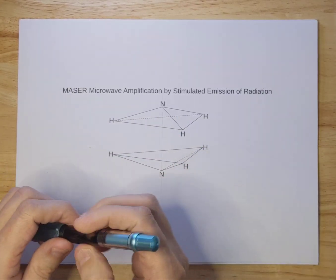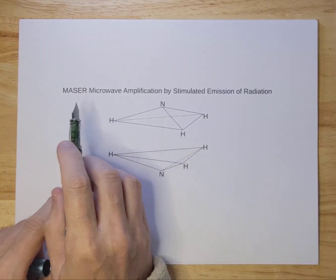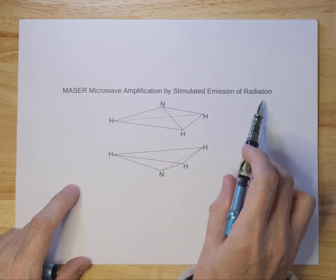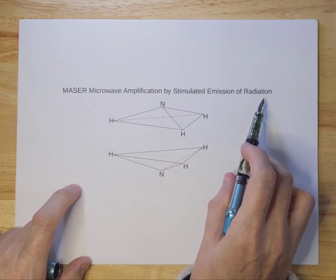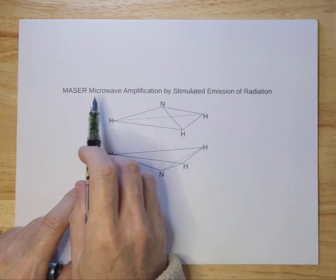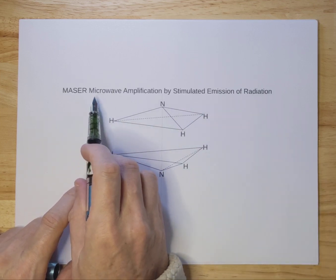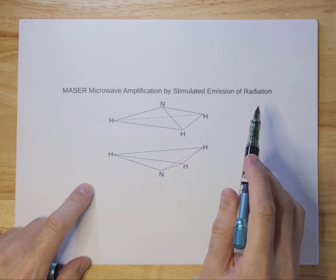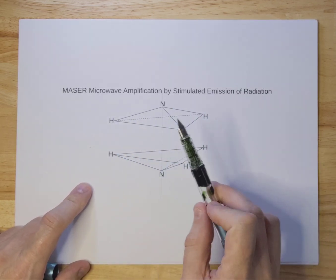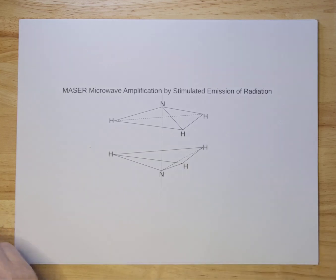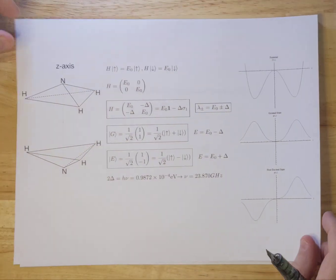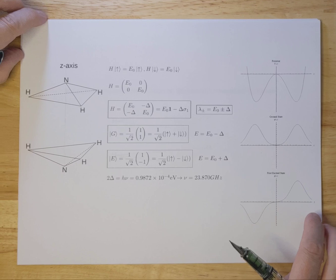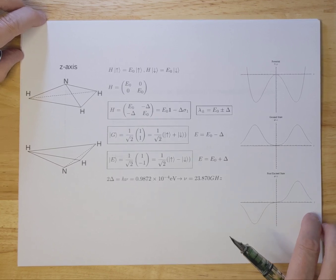Today I'm going to talk about a maser, which is a microwave amplification by stimulated emission of radiation. I'm going to use a quantum mechanical two-state system to describe the physics of the maser. To create a maser, you use ammonia molecules.